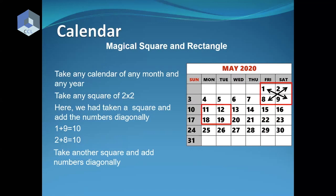One and nine is 10, eight plus two is 10. 19 is 30, 18 and 12 is 30. Six plus 14 is 20, 13 plus 7 is 20. 28 plus 22 is 40, 21 plus 29 is 40.